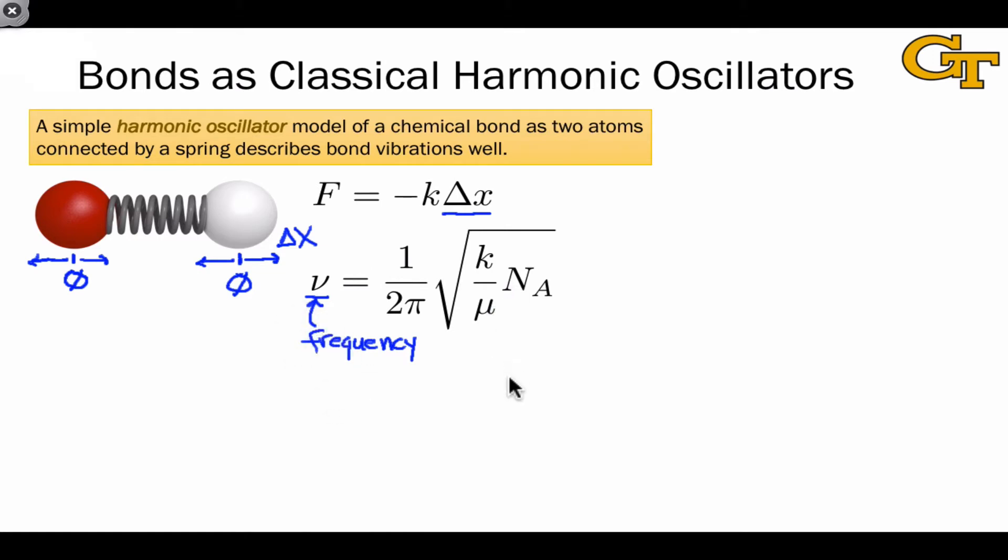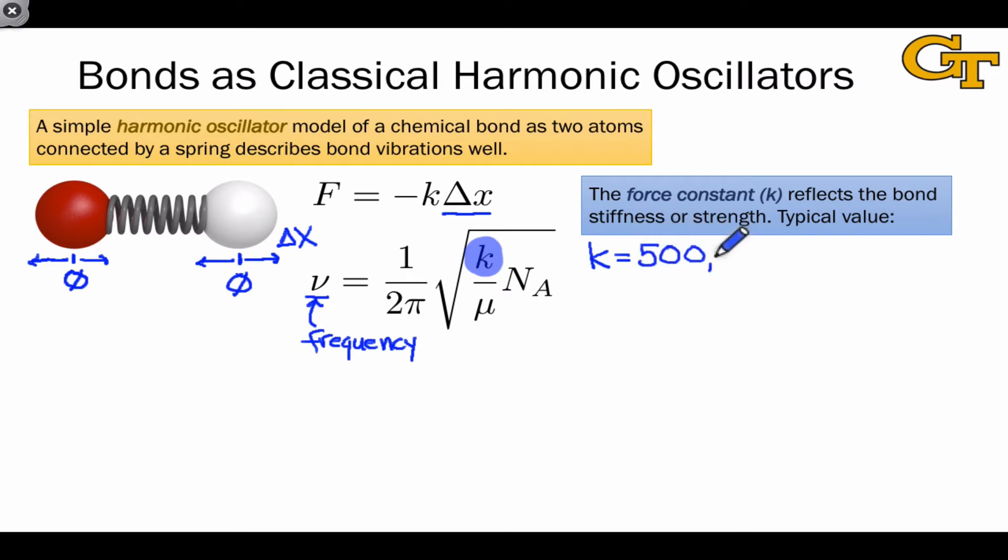There are two parameters involved here. The first is the force constant K. K reflects the strength or stiffness of the bond. And for single bonds in organic molecules, we can actually write a typical value that doesn't depend on the identities of the atoms involved in the bond. This is obviously a little bit hand wavy, but it works quite well.